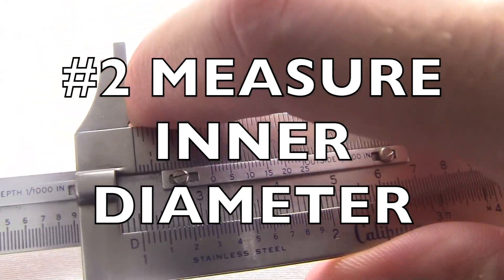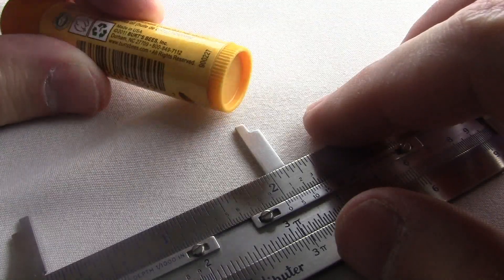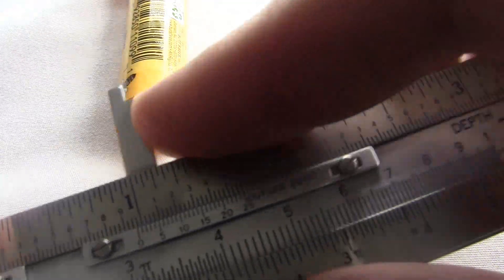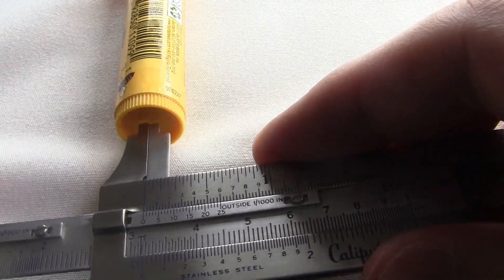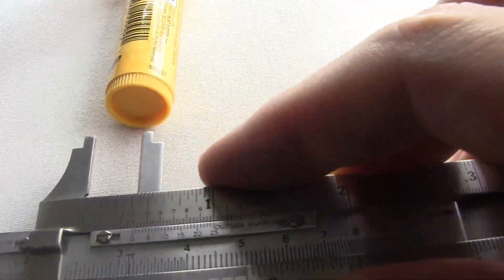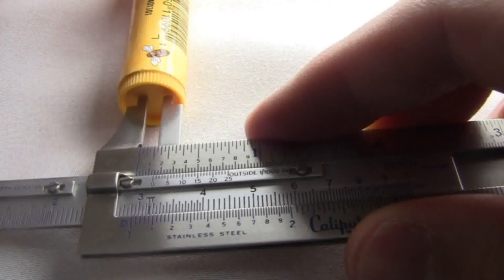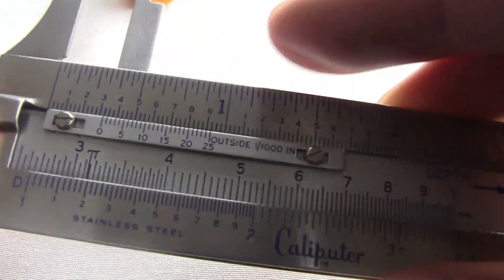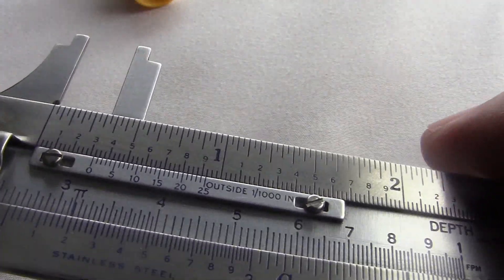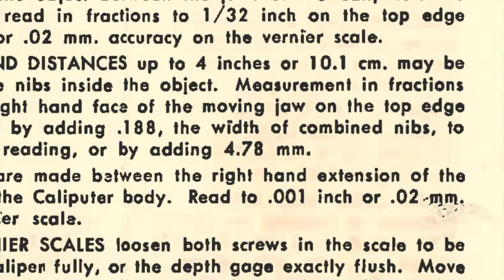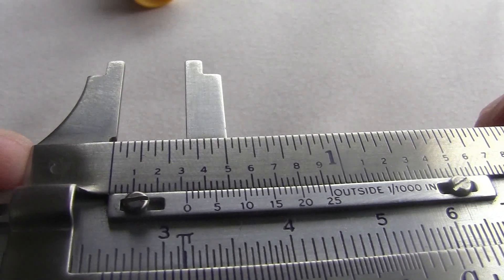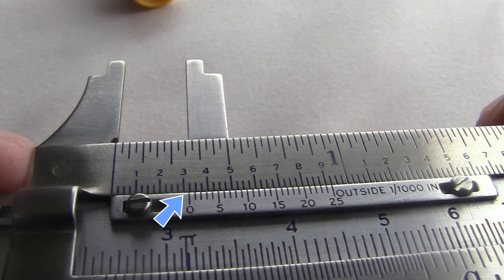Number two, measure the inner diameter. The tube here has an outer diameter, which is the distance across from one outside point to the other. But you could also measure this inner diameter, which is the distance across from one inside point to another. You use these notches in the jaws that the instructions call the nibs. So you stick the nibs inside. You stretch them out until they fill up the diameter. Then you read the measurement just like before, and you add .188 inches. That's the width of combined nibs. So here's my measurement. It's just shy of .325. And then I add .188 and I get .513 inches.